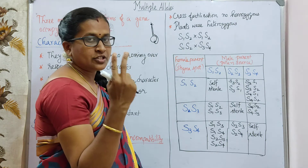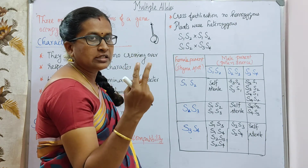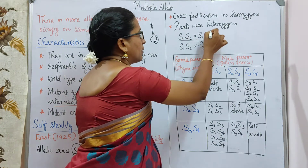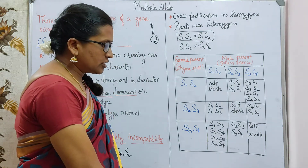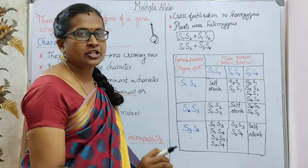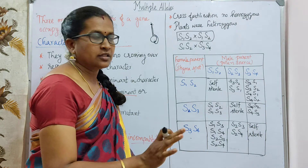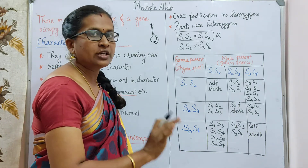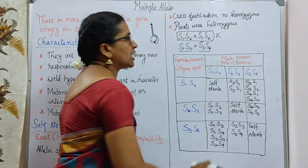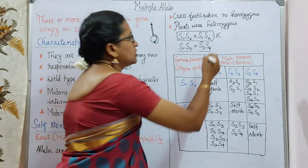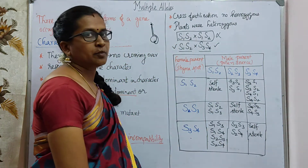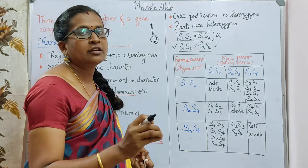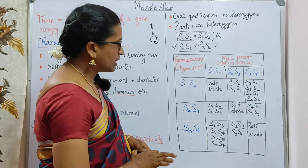As an example: in vegetative reproduction, chromosomes occur in pairs, so we write two genes — S1 and S2. If we cross S1S2 with S1S2, self-sterility will occur, because the same genes are present in the same plant. Fertilization will not be allowed. But if we cross S1S2 with S3S4 — which is another plant — there is a chance of pollination, gametic fusion, and fertilization.